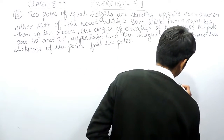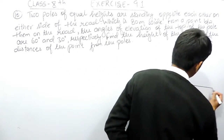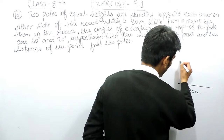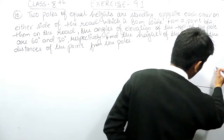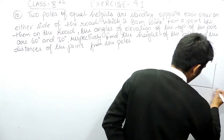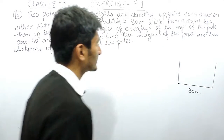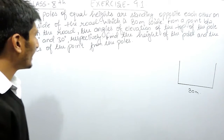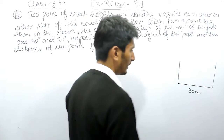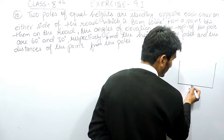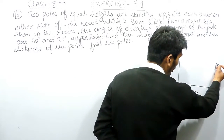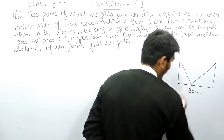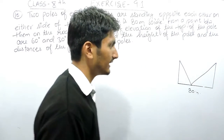It is given that there is a road which is 80 meters wide and two poles of equal height are standing on the opposite sides of this road. From a point between these poles on the road, the angles of elevation are given as 30 and 60 degrees.